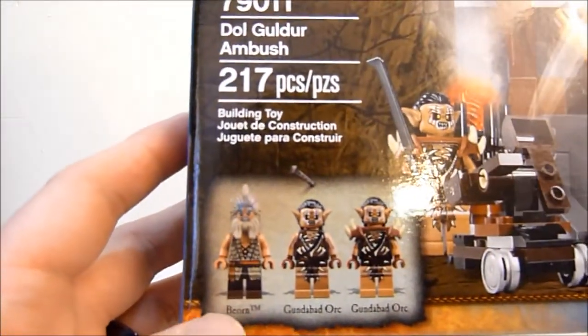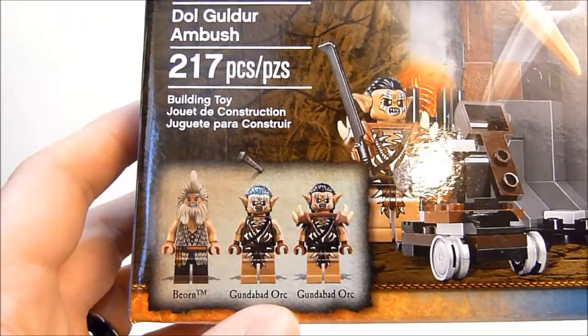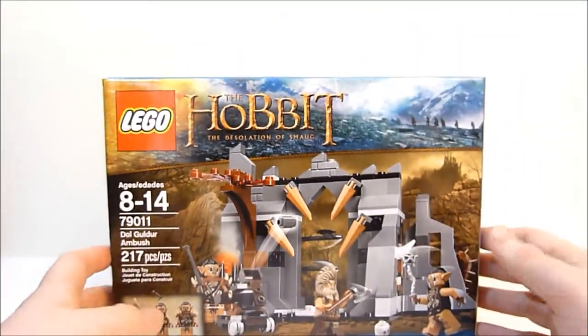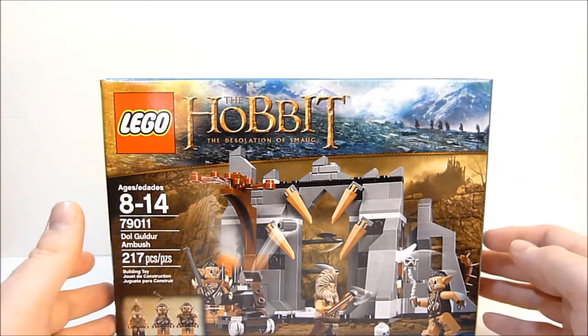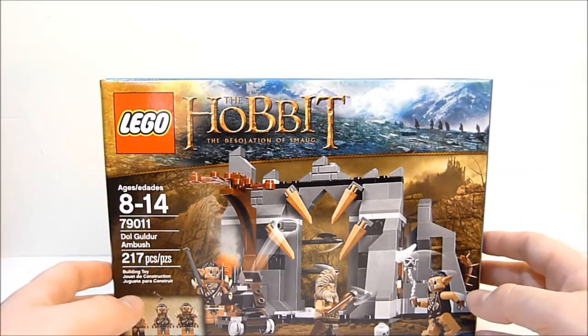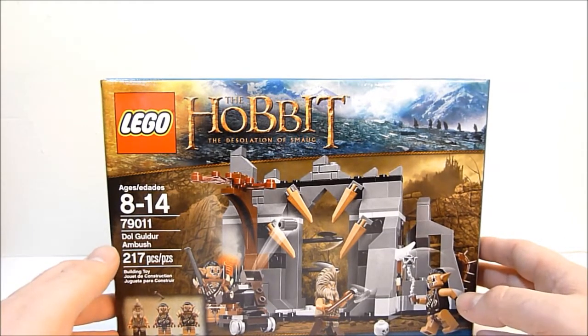It comes with three minifigs, as you can see, it's got a Beorn and two Gundabad orcs, and it just looks kind of like a little tiny set piece that we've kind of become familiar with these Lord of the Rings and Hobbit sets.